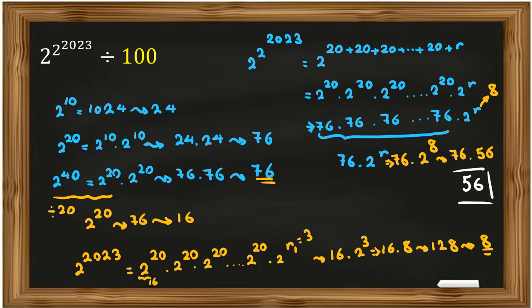We solved this problem completely. There are also other methods — using Euler's totient function, using modular arithmetic, dividing 100 into 4 and 25, finding the remainder, then applying the Chinese Remainder Theorem. There are lots of ways to solve harder problems like this. I tried to solve this problem using basic ideas. If you have questions, send a message to my WhatsApp number. Please don't forget to subscribe, turn on the bell, and like the video.